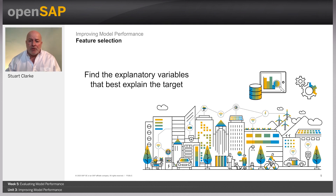Principal component analysis helps to represent the training data in lower-dimensional spaces while still retaining the inherent relationships in the data — it's a type of dimensionality reduction technique. There are also various methods to reduce features in the training dataset, such as backward and forward feature selection, which we've already looked at.